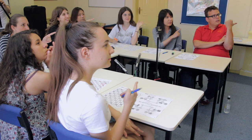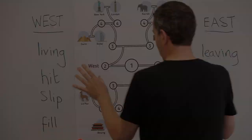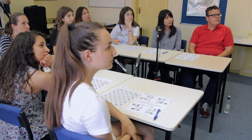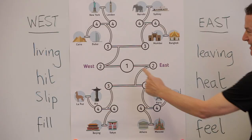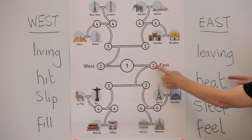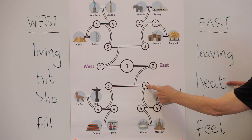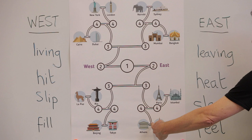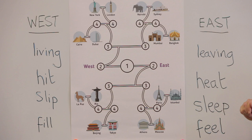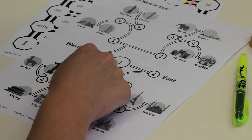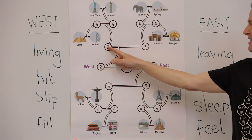Living. If I say a word from the west, you put your finger on the map and go along to there — no pen, just a finger. If I say a word from the east, you go there. So if I say 'leaving' you go east, if I say 'heat' you go east, if I say 'slip' you go west, and if I say 'feel' you go east. Let's try it: living, hit, sleep, Phil.